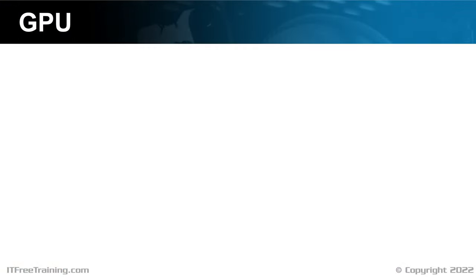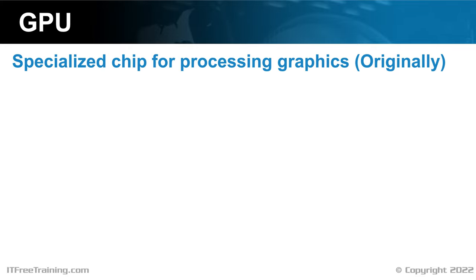To start with, a quick review of a GPU. A GPU is a specialized chip for processing graphics. Originally that was all it was used for. Nowadays GPUs have a lot of processing power and manufacturers have found other applications for them other than graphics.